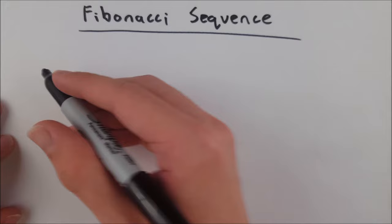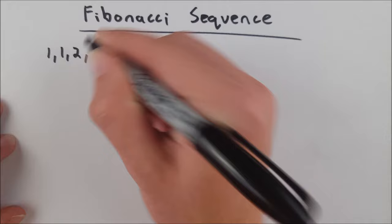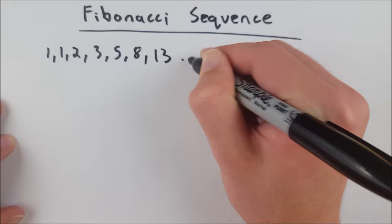So, the first few numbers of the Fibonacci sequence look like this: 1, 1, 2, 3, 5, 8, 13, and so on.